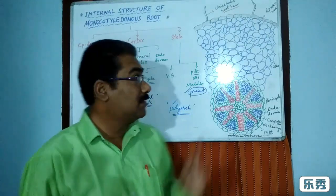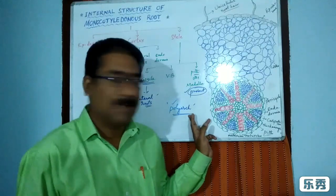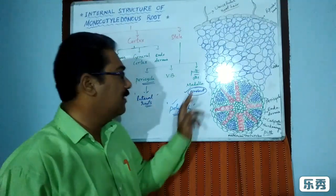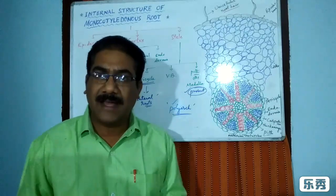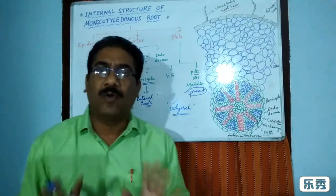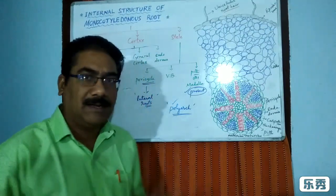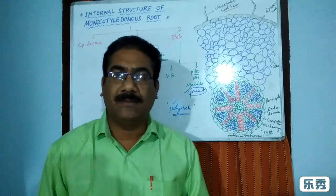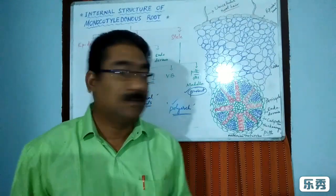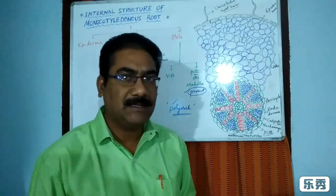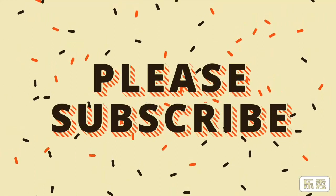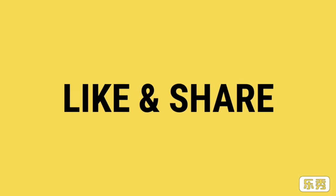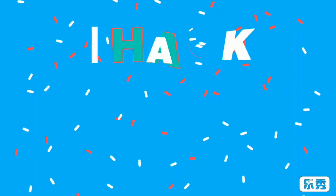The three most important distinguishing characters of the monocot root are: polyarch type of xylem vessels, well-developed medulla or pith, and absence of secondary growth. All remaining characters are similar to the dicot root. These are the important points for examinations. Please also watch my video on the dicot root. Thank you very much for watching.